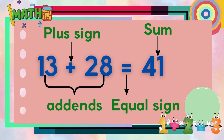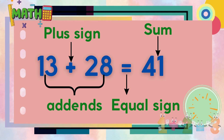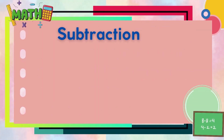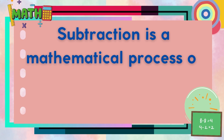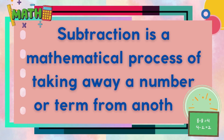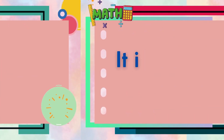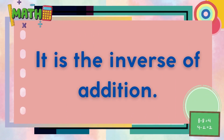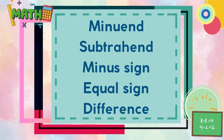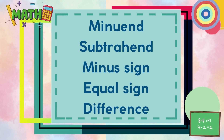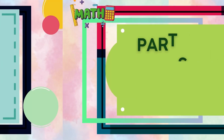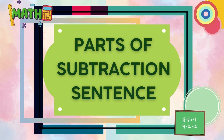The second arithmetic operation is subtraction. It is a mathematical process of taking away a number or term from another. It is also the inverse of addition. The parts of the subtraction sentence are: minuend, subtrahend, minus sign, equal sign, and difference.